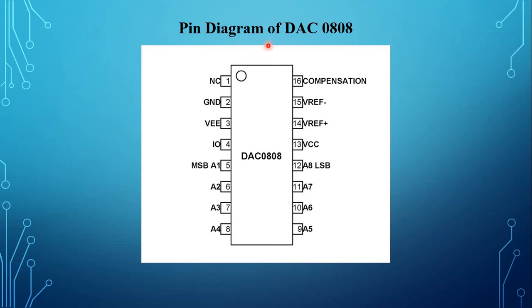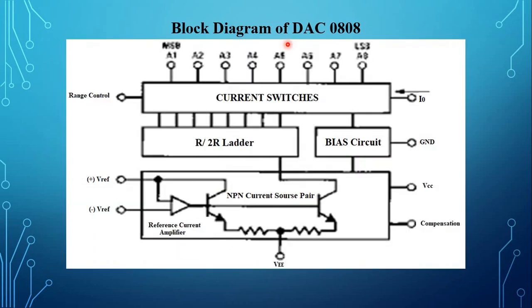This is the pin diagram of DAC 0808 — a 16-pin IC chip. The block diagram of DAC 0808 consists of a reference current amplifier, an R-2R ladder network, and 8 high-speed current switches.